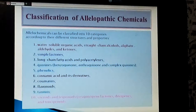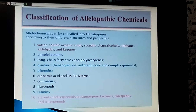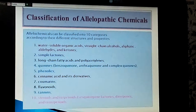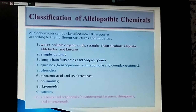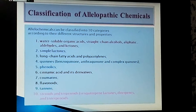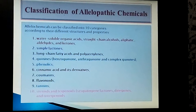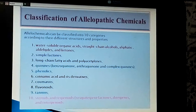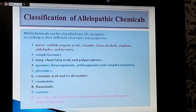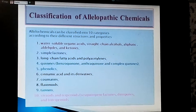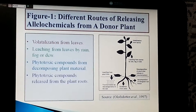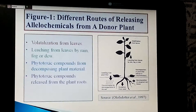The 10 categories include: water-soluble organic acids, straight-chain alcohols, aliphatic aldehydes, and ketones. Organic acids contain acidic properties and include hydroxyl groups, phenolic groups, and alcohol groups. Also: simple lactones, long-chain fatty acids, polyacetylene, quinones — which are fat carbon derivatives — phenolic cinnamic acid and its derivatives, coumarins, flavonoids, tannins, steroids, and terpenoids. Figure 1 shows different routes of releasing allelochemicals from a donor plant.